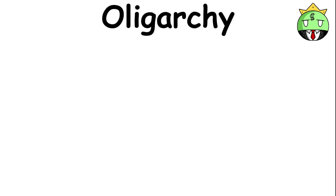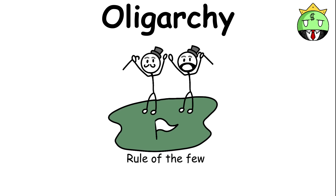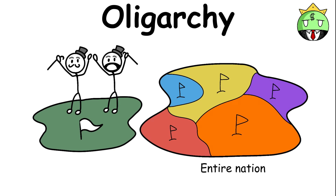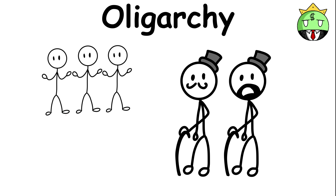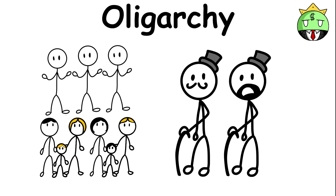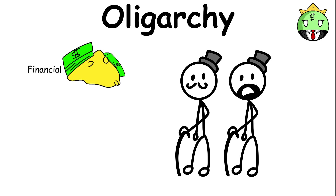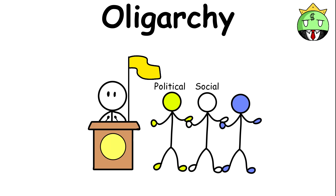Oligarchy, which can be translated to rule of the few, is a form of government wherein only a few oligarchs have power over the entire nation. These oligarchs come from different groups or families that usually rise to power through financial or military means. The country's political, social, and economic affairs are settled through the decisions made by the oligarchs.